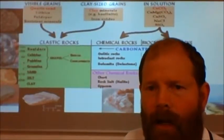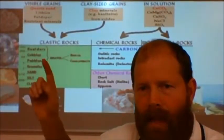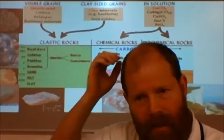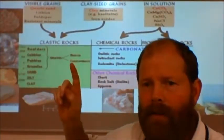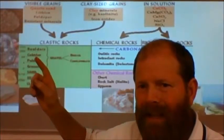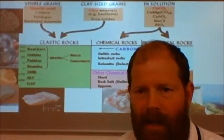The first kind of sedimentary rock I want to talk about is clastic rocks. We see those here made from bits of rocks that are broken off, and those are based on the size of the particles that have been cemented together.